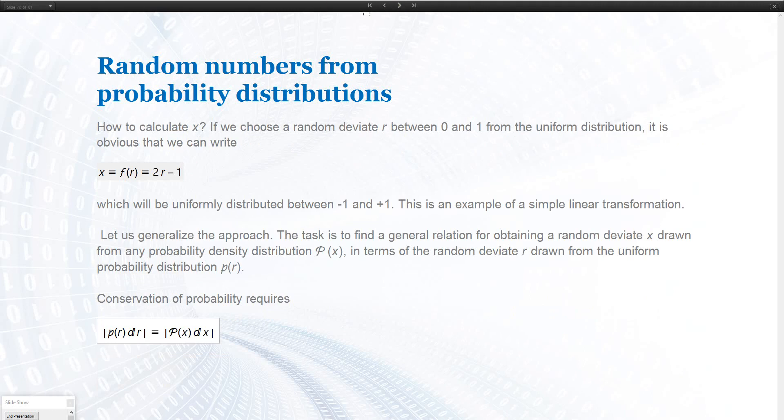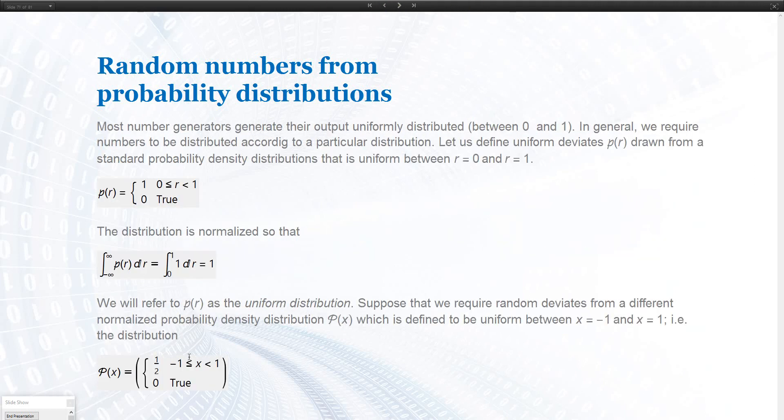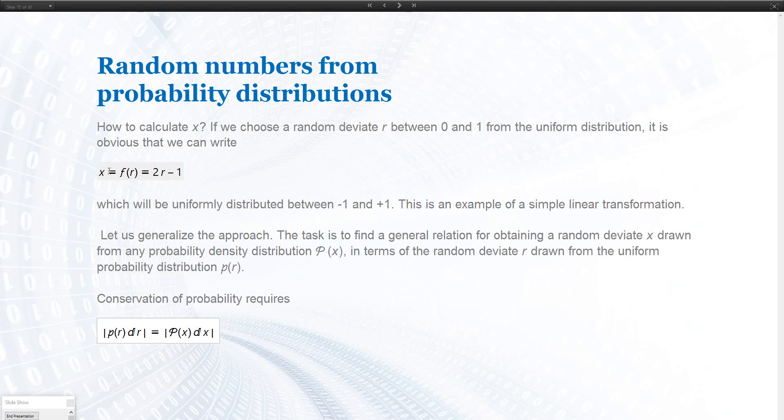So if we now would like to compute x, so we want to have random x's that are between minus 1 and 1, but what we have is only numbers r, that are between 0 and 1. Then we can, what the relation between x and r is, x can be computed at 2 times r minus 1. So that's basically, this is x between minus 1.